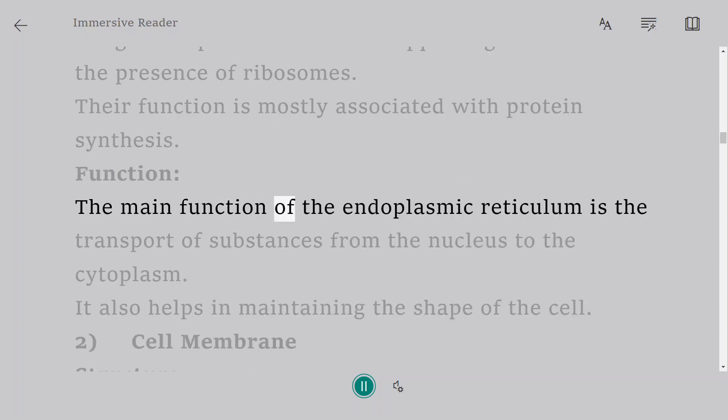The main function of the endoplasmic reticulum is the transport of substances from the nucleus to the cytoplasm. It also helps in maintaining the shape of the cell.